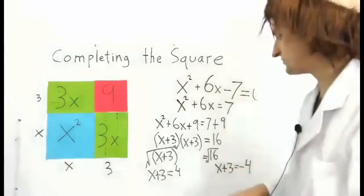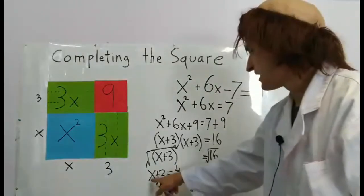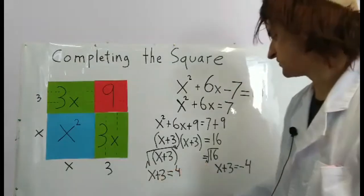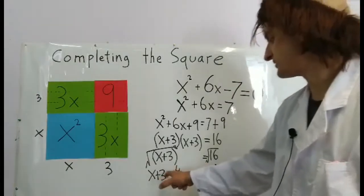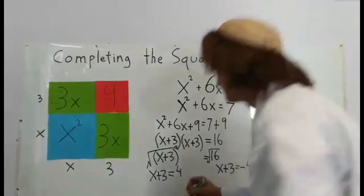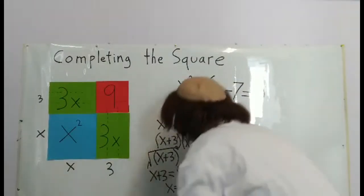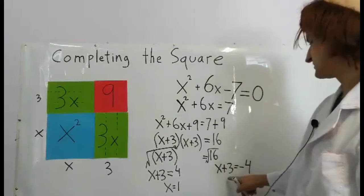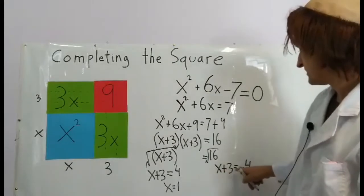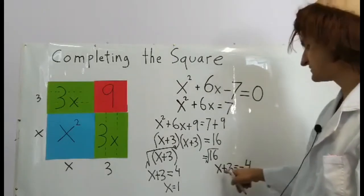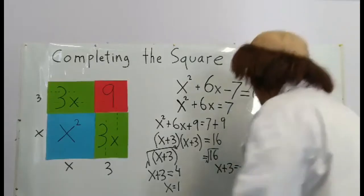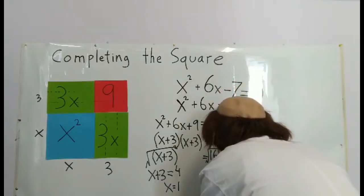Now we have two problems to solve. x + 3 = 4. I need to subtract 3 from each side. That means x = 1. Here I need to subtract 3. -4 - 3 = -7, so x = -7.